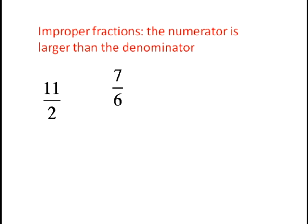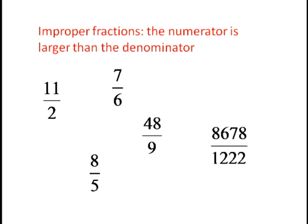So take 11 over 2. Now you may have seen this written as a mixed number before. Typically in math, people don't do that once you get out of arithmetic. In algebra, we would just leave it as 11 over 2. In calculus, we would just leave it as 11 over 2. Anytime the numerator is larger than the denominator, we're going to have what we call an improper fraction.